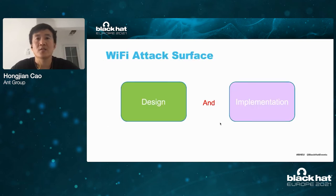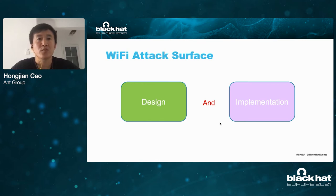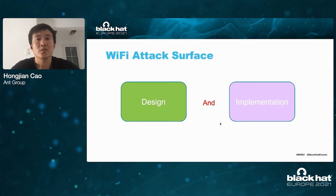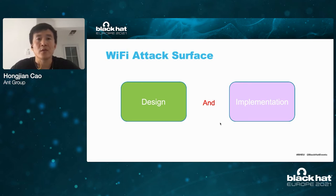Wi-Fi vulnerability mining can start from two aspects: protocol design and its implementation. We know that the design of the protocol is not perfect. Through the development process of Wi-Fi protocol — WEP, WPA1, WPA2, and WPA3 — the flaws of the protocol still exist. There may also be vulnerabilities in implementation, such as buffer overflow and logic errors. Learning the standard specifications is very helpful when mining Wi-Fi vulnerabilities.